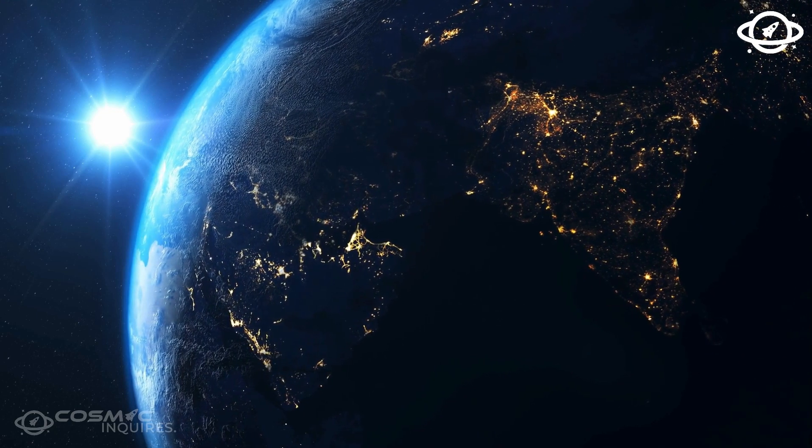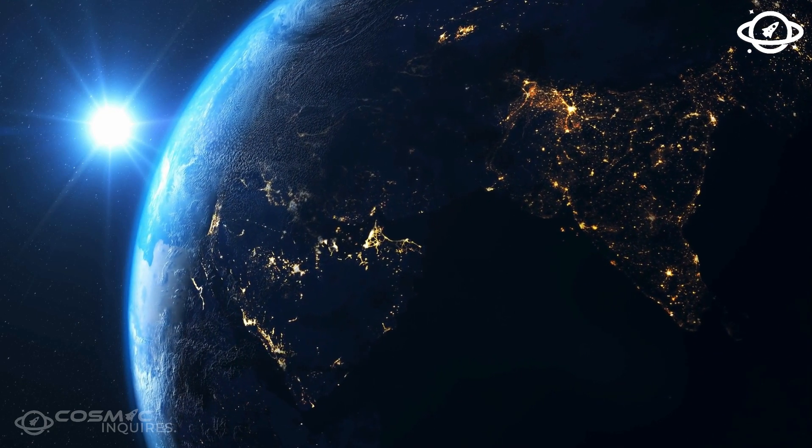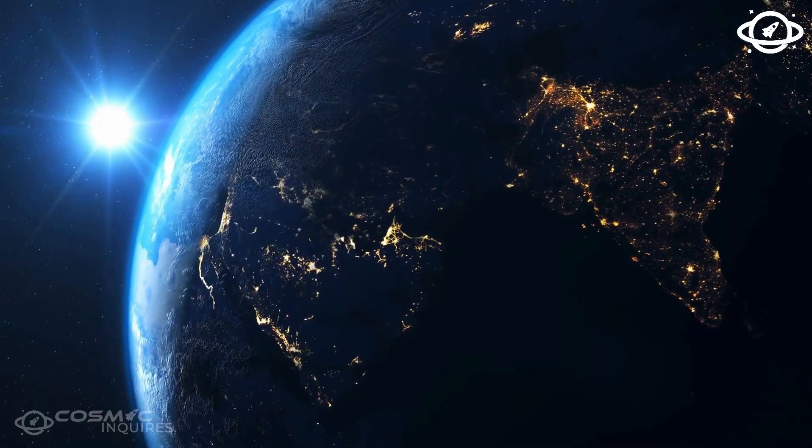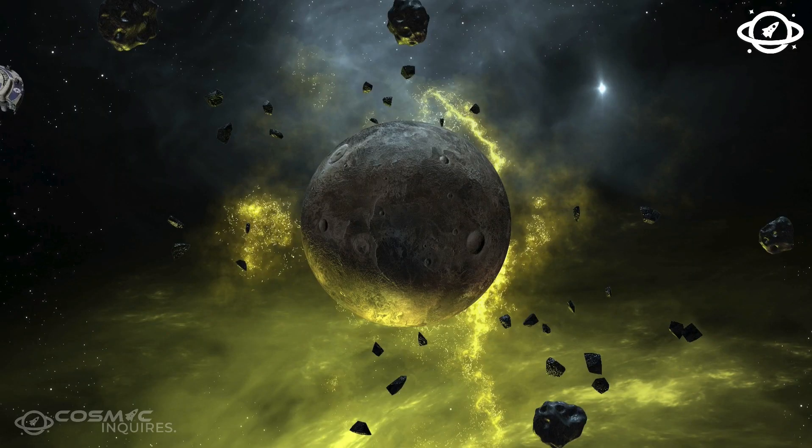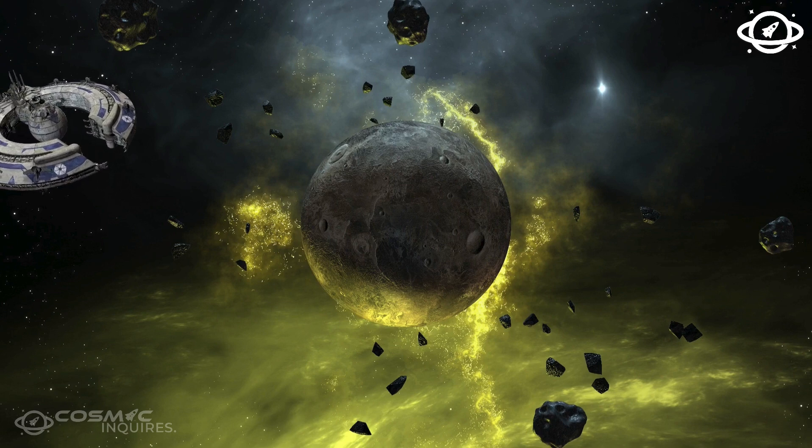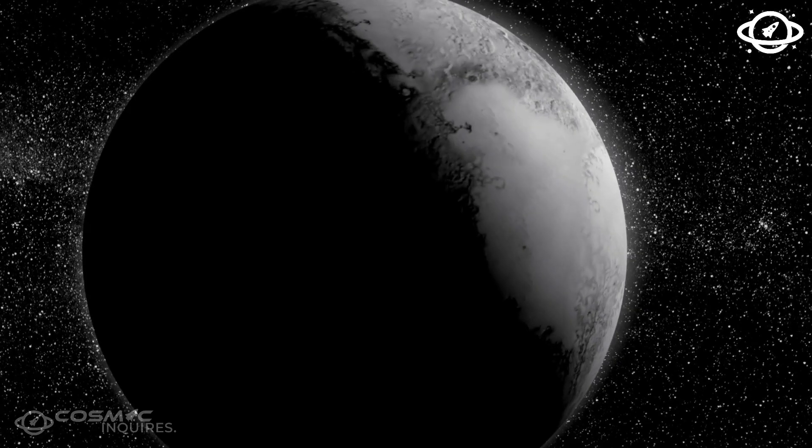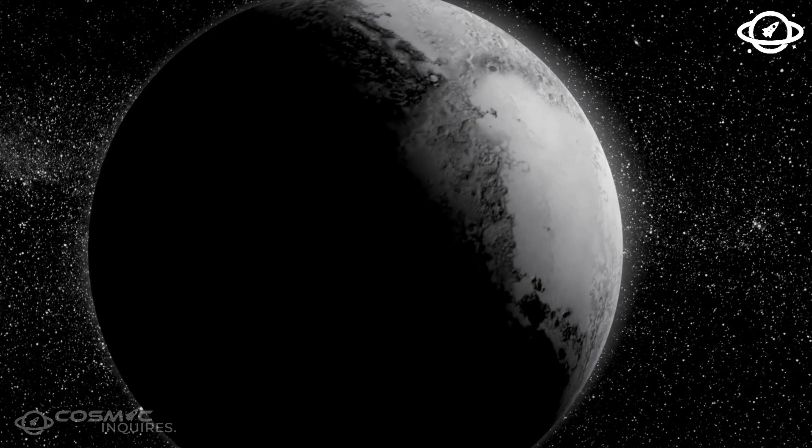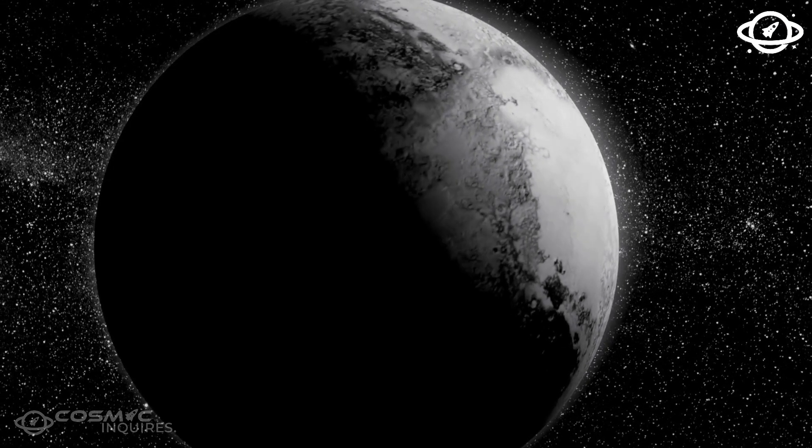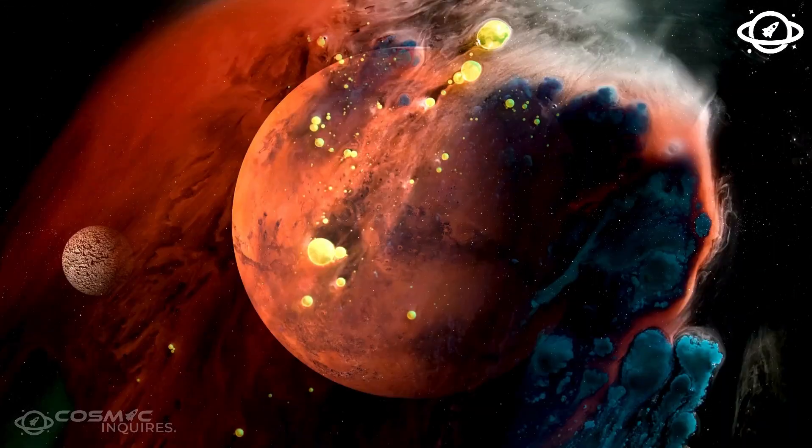Behind Neptune, there's speculation among researchers about a mysterious large planet called Planet X. This hypothetical planet is thought to be slightly smaller than Neptune but significantly larger than the minor planets in our solar system. Some experts believe it may have an enormous orbit around the Sun, potentially extending beyond the solar system's boundaries.